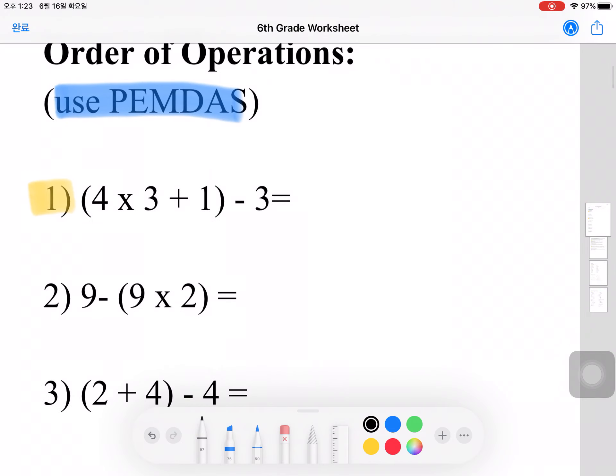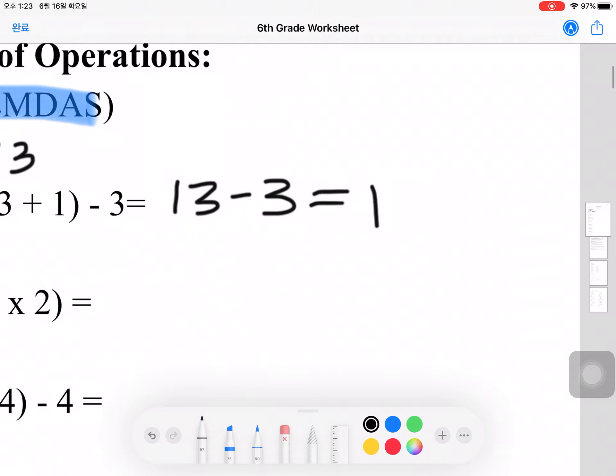For example, for number 1, we can see that 4 times 3 plus 1 is inside the parentheses, which means we have to solve that first. So 4 times 3 is 12 plus 1, that's 13. So 13 minus 3, if we solve that, it comes out to 10. So 10 would be your final answer.